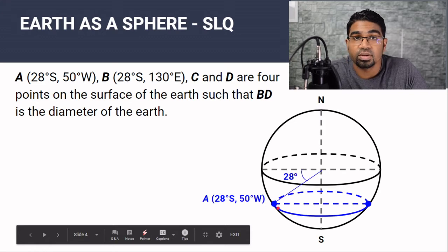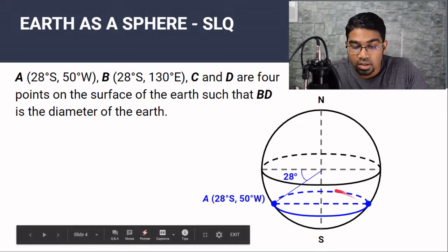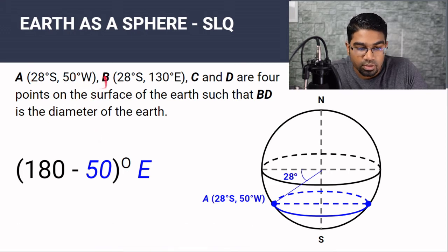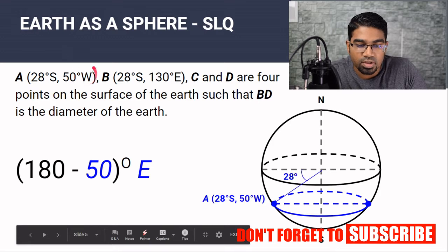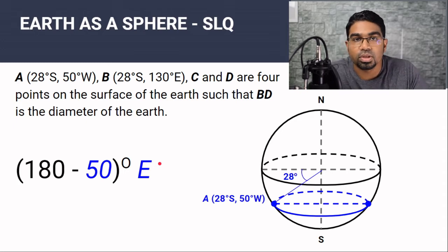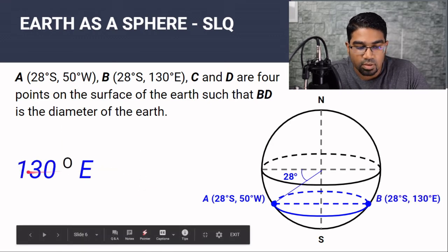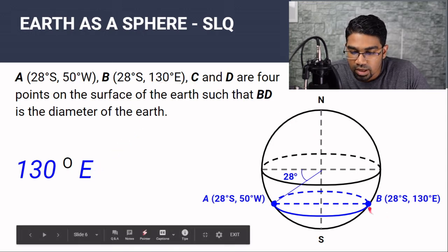B can lie anywhere on this parallel of latitude at 28 degrees south. In order to find the longitude of a point on the opposite side of the Earth, the formula is: 180 degrees minus the longitude of that location. For A, the longitude is 50 degrees west, so 180 minus 50 equals 130. Since A is on the western hemisphere, the opposite point will be on the eastern hemisphere. This turns out to be 130 degrees east, which is exactly the longitude of point B.